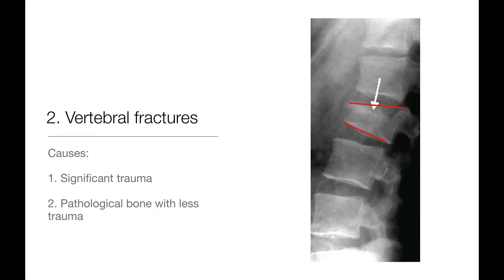Unless there is a history of significant trauma, vertebral fractures usually occur in bones that are pathologically weakened, such as those which are osteoporotic or riddled with metastases. The fractures are usually crushing and occur in the anterior part of the vertebral body, making the bone look wedge-shaped. Patients often complain of back pain that is worse on standing, and may have noticed some loss of height or kyphosis. On examination, palpation of the fractured vertebrae elicits tenderness.